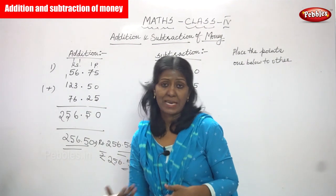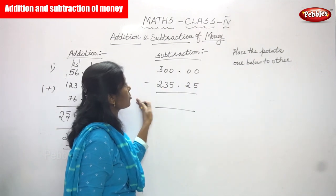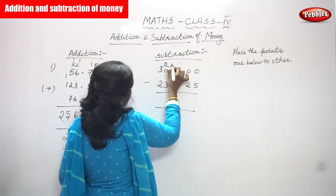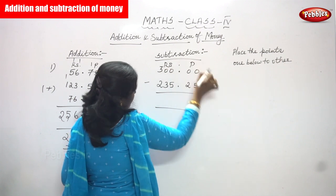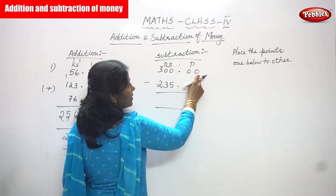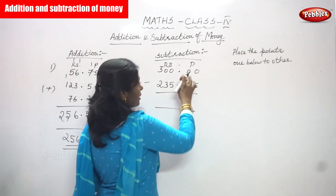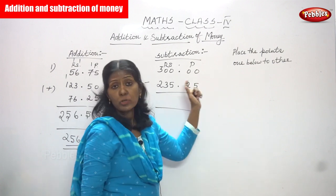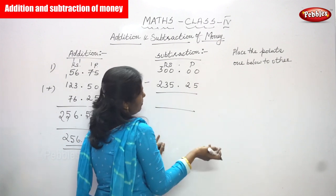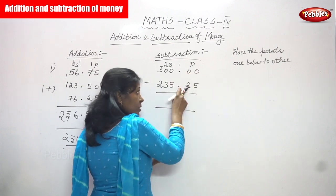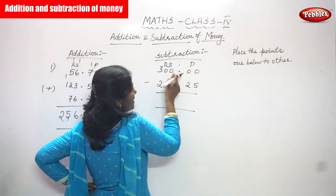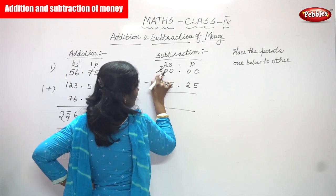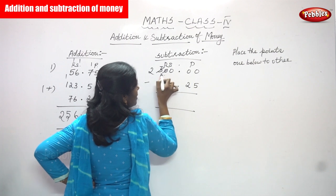The next one is subtraction. The number given is 300 rupees minus 235 rupees 25 paise. Since 300 rupees has no paise digits, I write two zeros after the decimal: 300.00. Now I subtract. Zero minus 5 — you can't subtract. There are zeros throughout, so you have to borrow from 3. Borrow 1 from 3, so 3 becomes 2, and the zero becomes 10.